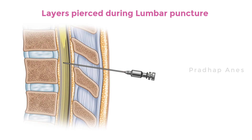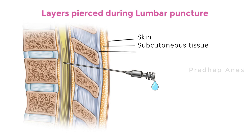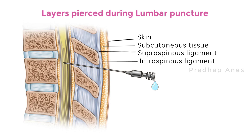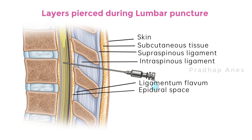While doing a lumbar puncture, the needle passes through several structures and finally causes the return of cerebrospinal fluid. The structures include: skin, subcutaneous tissue, supraspinous ligament, interspinous ligament, ligamentum flavum, epidural space, dura, arachnoid, and subarachnoid.